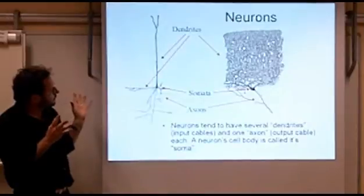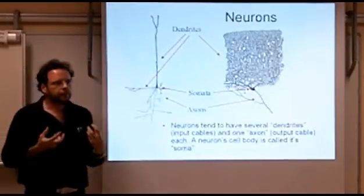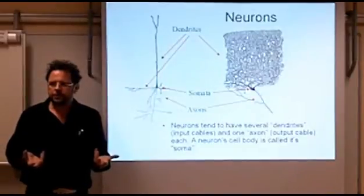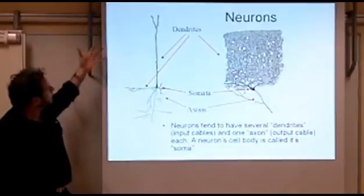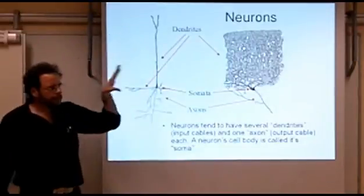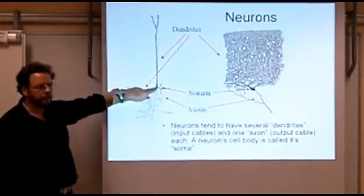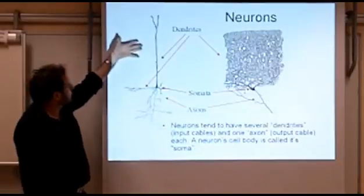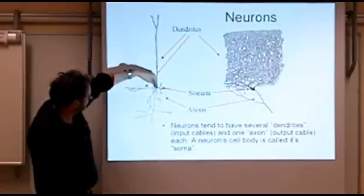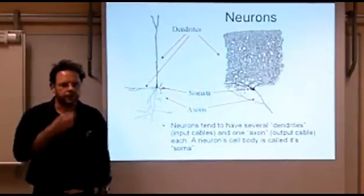And neurons, as we will see later, are really devices for collecting information and for processing information. And they collect their information, certainly in the mammalian brain, almost exclusively through their dendrites and a little bit through their soma. And they then output their information to the axon. So information goes in here and information comes out there. This is how they basically, it runs through the neuron like this.